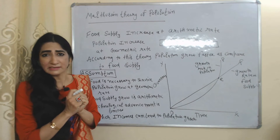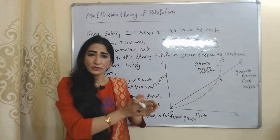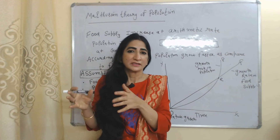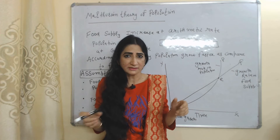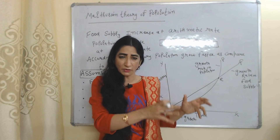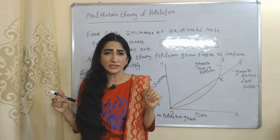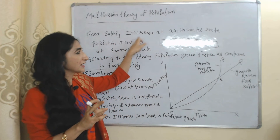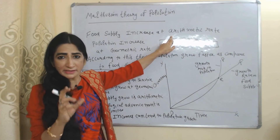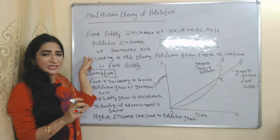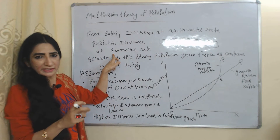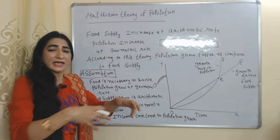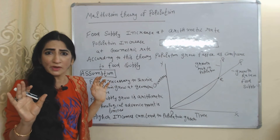First, we will see the Malthusian theory of population. This theory mainly tells us the relation between the growth rate of food supply and the growth rate of population. According to this theory, food supply increases at an arithmetic rate but population increases at a geometric rate — meaning population grows at a very fast rate compared to growth in food supply.